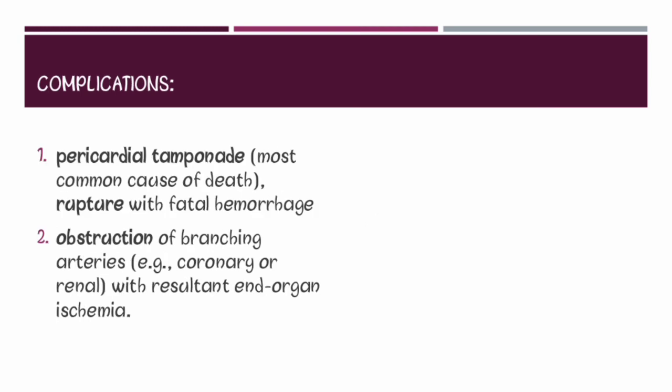The complications of aortic dissection include: first, pericardial tamponade — fluid buildup between the heart muscle and the sac covering the heart — which puts pressure on the heart and prevents it from working properly; this is the most common cause of death. Second, it can rupture with fatal hemorrhage. Third, it can cause obstruction of branching arteries such as the coronary or renal arteries, leading to end organ ischemia.